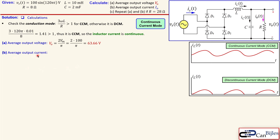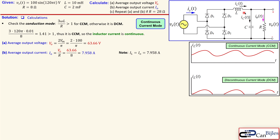The average output current is determined using Ohm's law. We know the resistor value and the average output voltage, so dividing 63.66 V by 8 ohms gives 7.958 amps. This is also the average inductor current, which is again 7.958 amps.